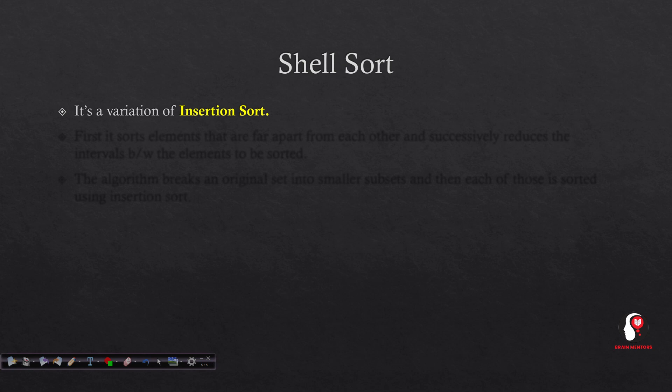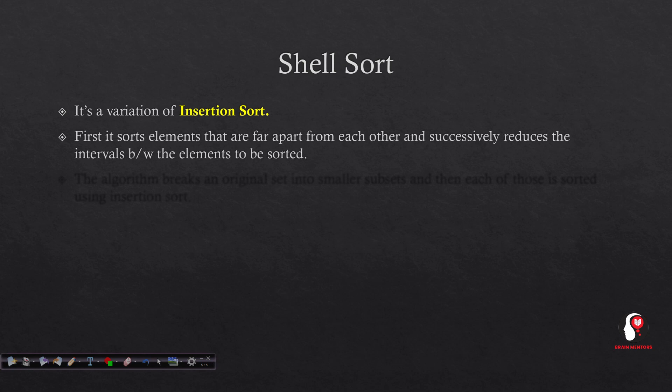What do we do in shell sort? First, it is going to sort elements that are far apart from each other - elements separated by a particular gap or distance. We will compare all elements at a constant gap. In an array with gap 4, we compare: first with fourth element, second with fifth, third with sixth. Then in the next iteration, we reduce that gap.